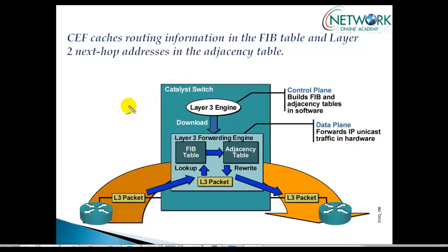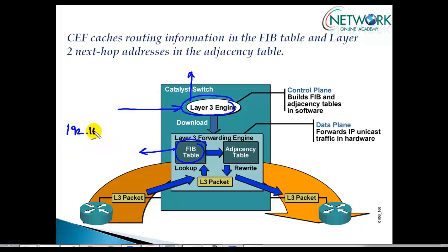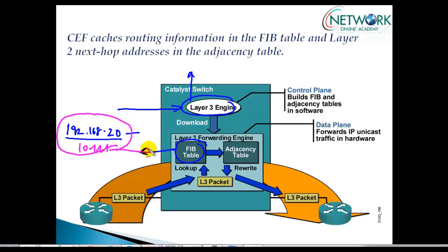The FIB table is your Layer 3 engine at the data plane level. The control plane is responsible for building the routing information just like a normal router does. Based on that, the FIB table contains each and every destination network ID, and it is built proactively before a packet arrives at the router. For example, if 192.168.2.x is the destination network ID, and to reach that destination the next-hop is 10.1.1.1, this information is maintained in the FIB table.